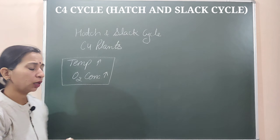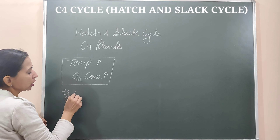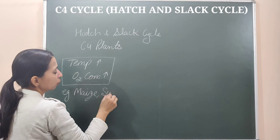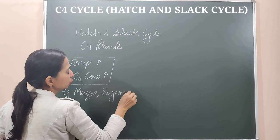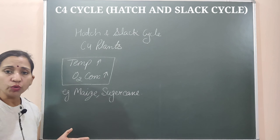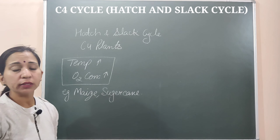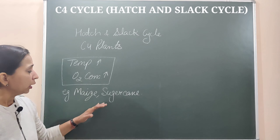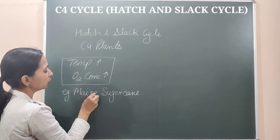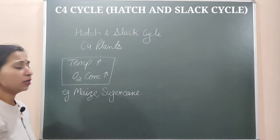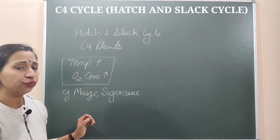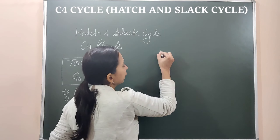Examples of C4 plants are maize, sugarcane, sorghum, euphorbia, chenopodium, etc. These kinds of plants are known as C4 plants. They have two types of adaptations and modifications inside them to avoid photorespiration.